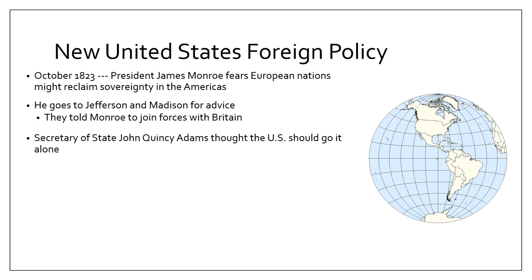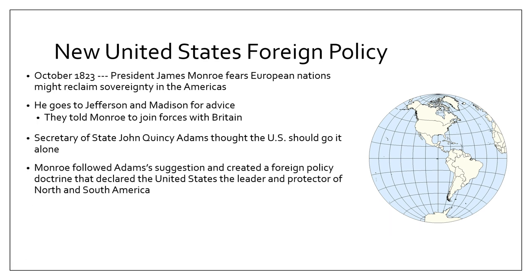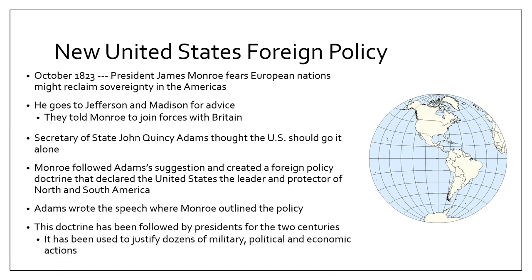Monroe also talked to his Secretary of State, John Quincy Adams, who thought that the US should go it alone and establish itself as the predominant power in the Western Hemisphere. Monroe followed Adams' suggestion and created a foreign policy doctrine declaring that the United States is the leader and protector of North and South America. Adams actually wrote the speech where Monroe outlined this policy. The doctrine has been followed by US presidents for the last two centuries and used to justify dozens of military, political, and economic actions.